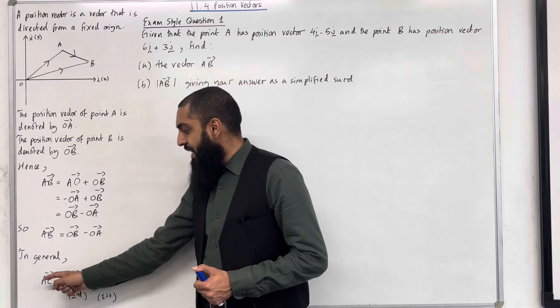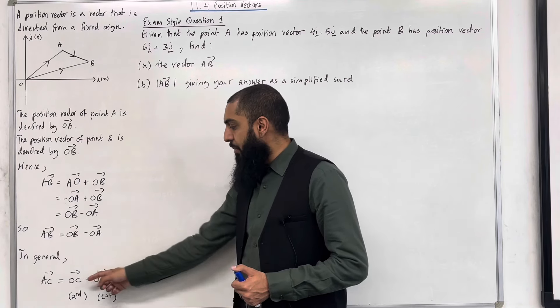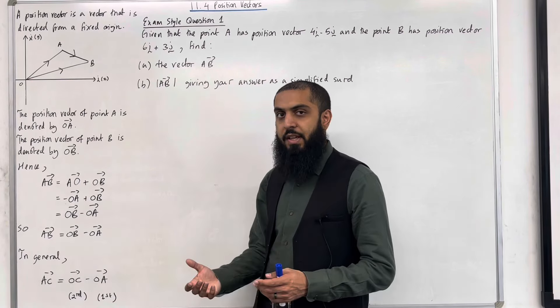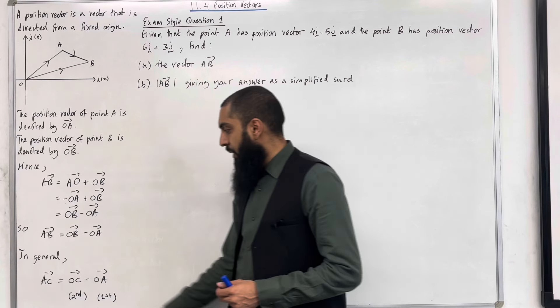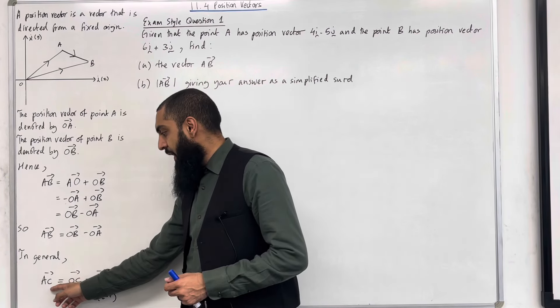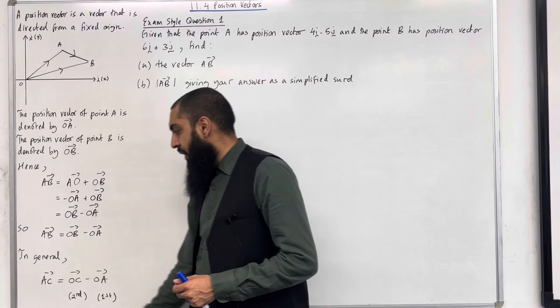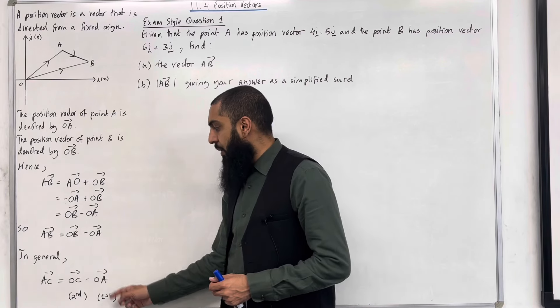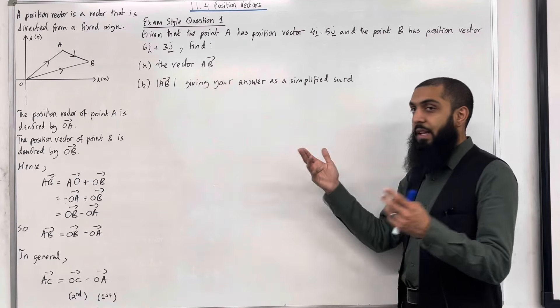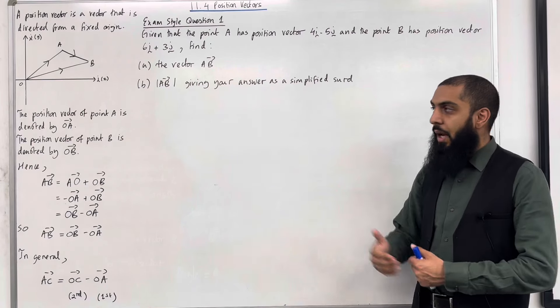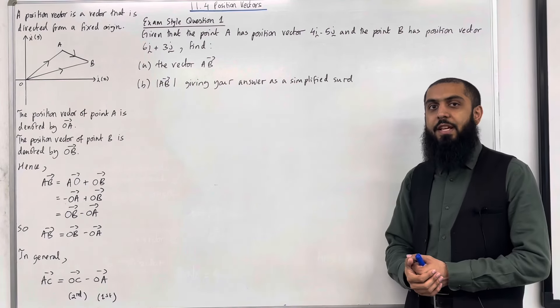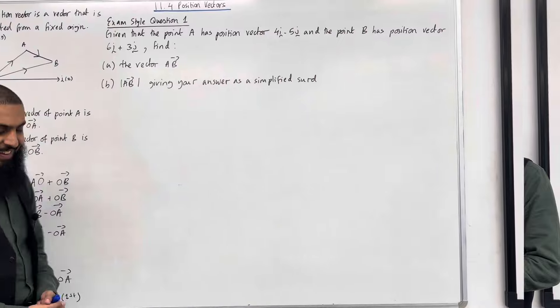In general, the vector A to C is given by O to C minus O to A. There is a pattern. You do the second letter minus the first letter. So you can see that over here, the second letter is C and the first letter is A. So you do O to C minus O to A. These are the key facts of 11.4 position vectors. I'll be implementing these key facts within exam style questions. Let's go.